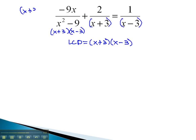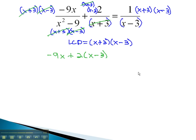We'll multiply each term by these two factors, x plus 3 times x minus 3. As we do, both factors divide out of the first fraction, leaving just the negative 9x. Plus, in the second fraction, the x plus 3's divide out, leaving 2 times x minus 3. Equals, in the last fractions, the x minus 3's divide out, and we have 1 times x plus 3.